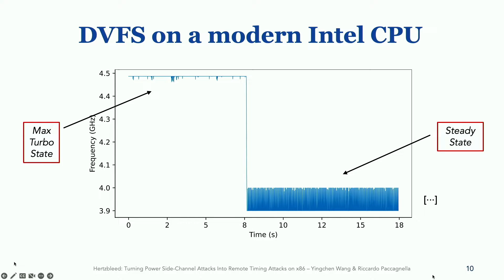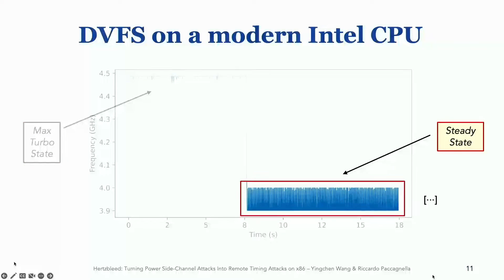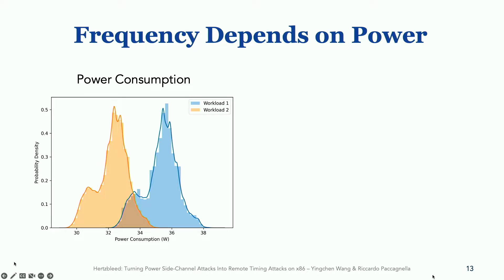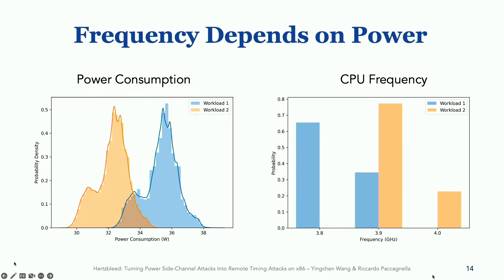Our analysis focuses on this second part, which is steady state. And in particular, our key observation is that steady state frequency depends on power consumption. For example, here are two workloads that normally consume different amounts of power. Our key observation is that these two workloads will also run at different steady state frequency. The higher the power consumption, the lower the steady state frequency. From now on, we will refer to steady state frequency just as frequency.